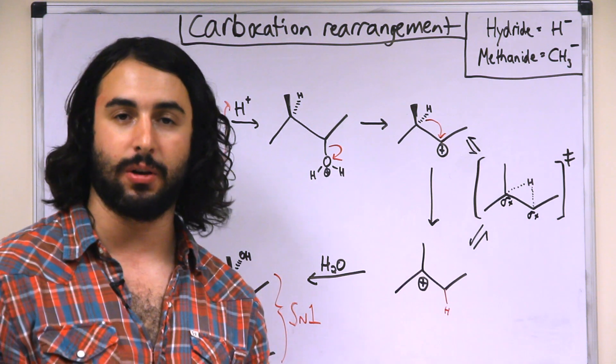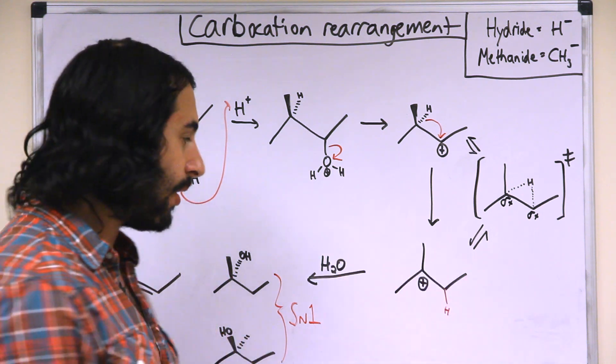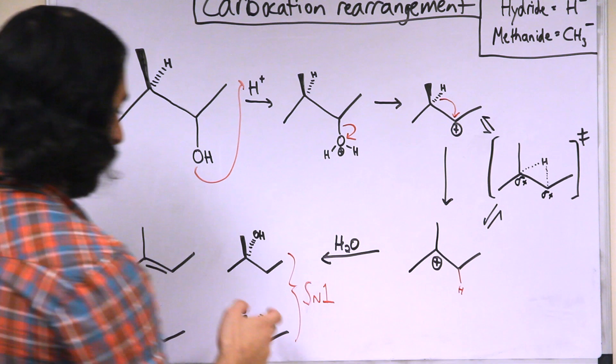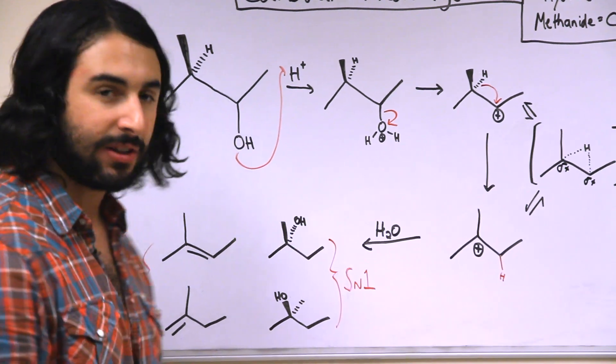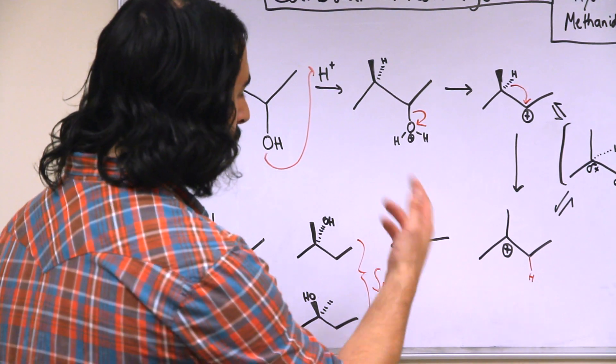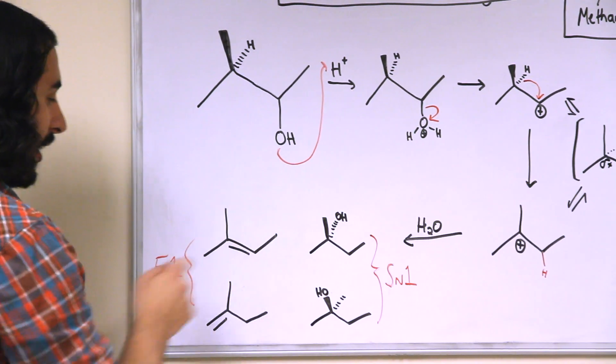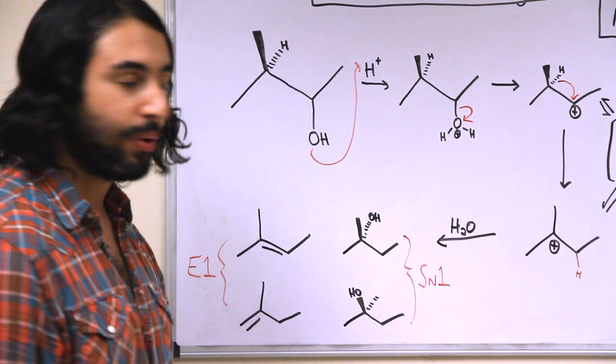And let's say we're just going to interact with a water molecule, a molecule of solvent. Now this oxygen can either go ahead and coordinate to the carbocation, giving us a racemic mixture of SN1 products, or it can eliminate, grab a proton there or grab the proton that shifted and give us one of these two different E1 products.